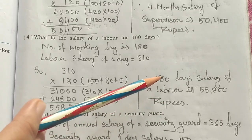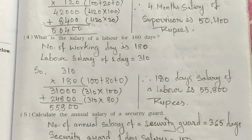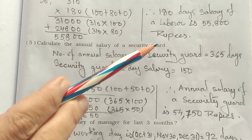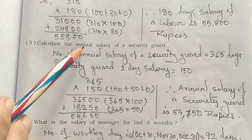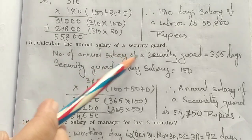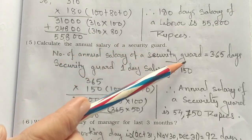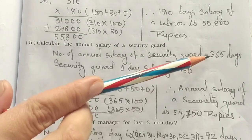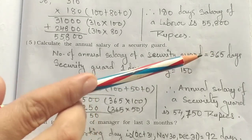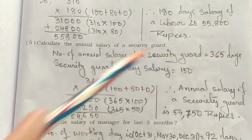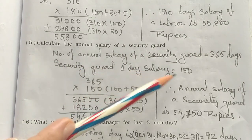Question 5: Calculate the annual salary of a security guard. Annual salary means the yearly salary. Since the question states 365 days in a year, annual means 365 days. The security guard's one-day salary is 150 rupees.